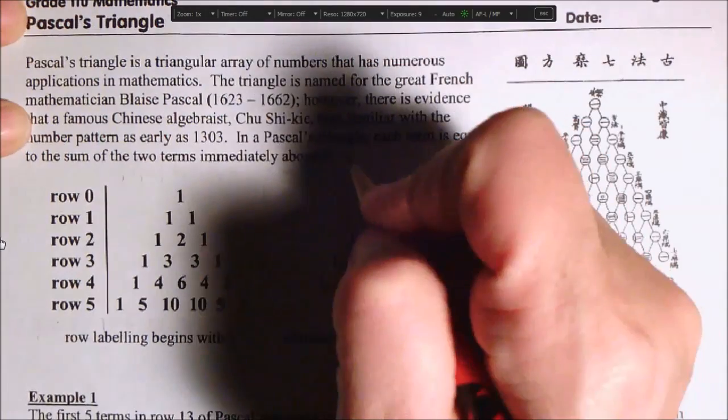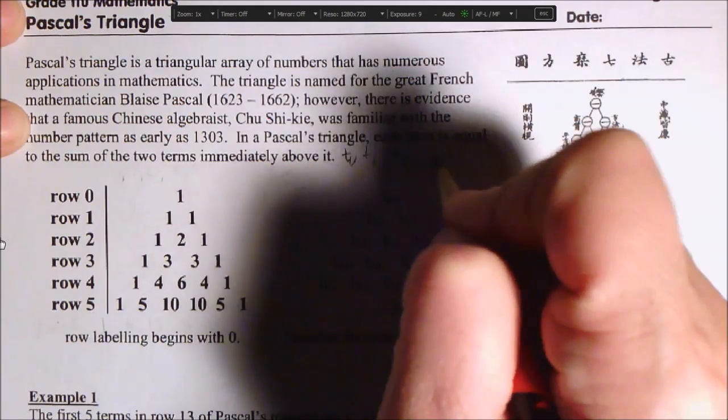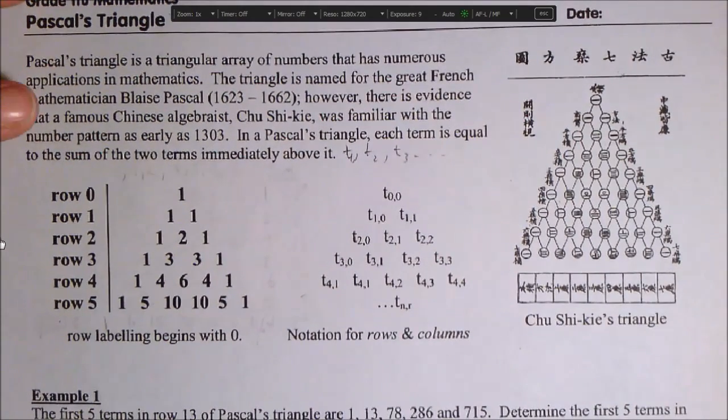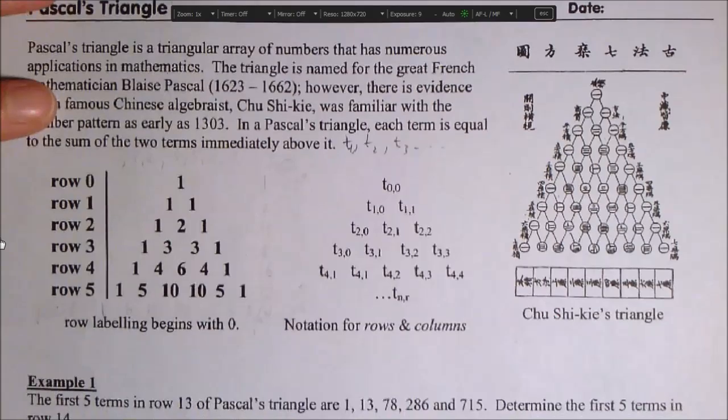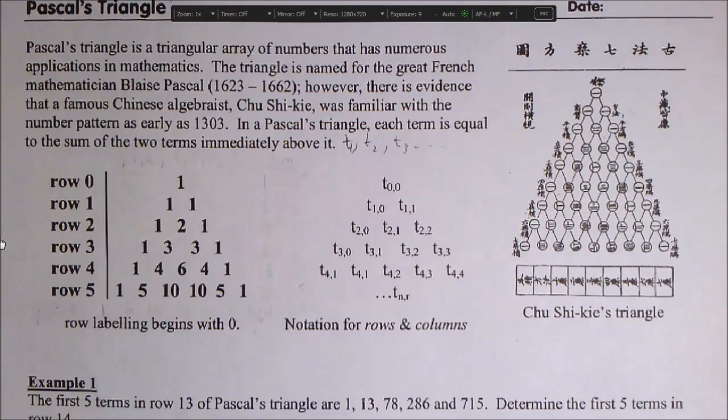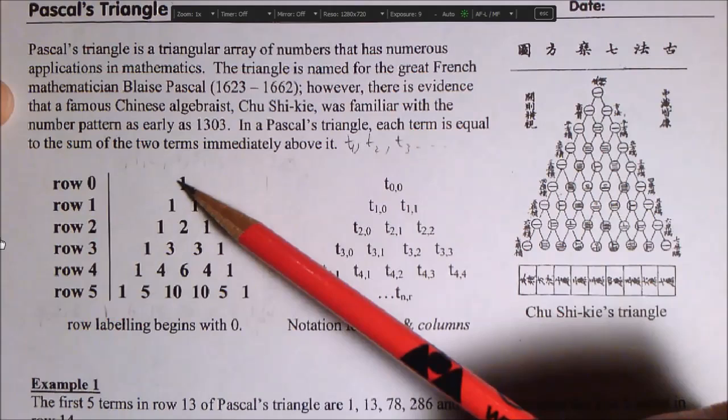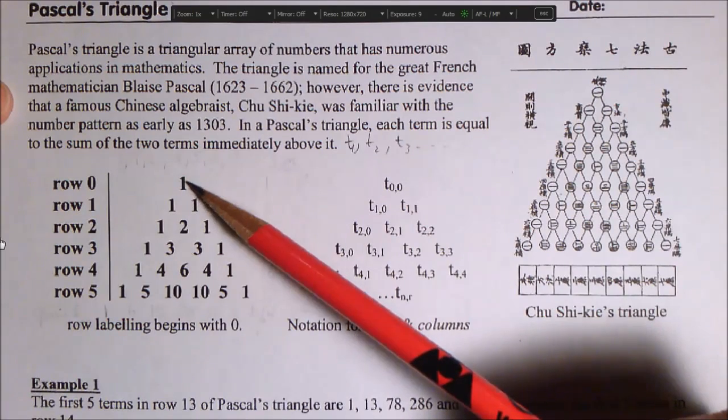So remember with sequences we label things T1, T2, T3, term 1, term 2, term 3. Because the triangle has rows and columns, it's not enough to call them T1, T2, T3. We have to say which row the term is in and which position in the row. So what we do, we name the rows. We number the rows starting at 0.